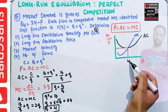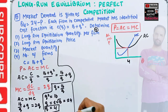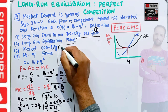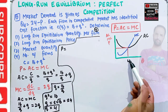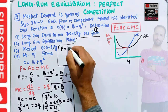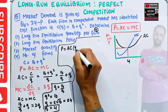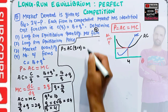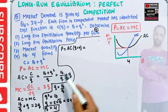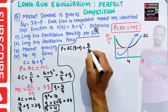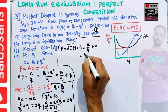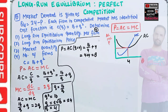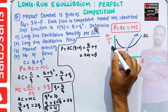At equilibrium, output produced by each firm is 4. Now we find the equilibrium price. Since P equals average cost, we evaluate average cost at Q = 4: AC = 16/4 + 4 = 4 + 4 = 8. So the long-run equilibrium price is 8.